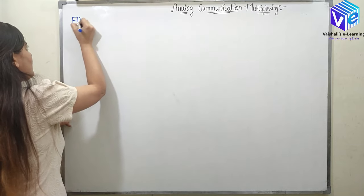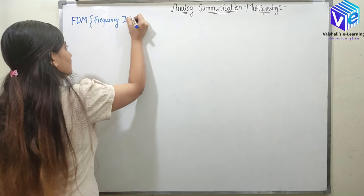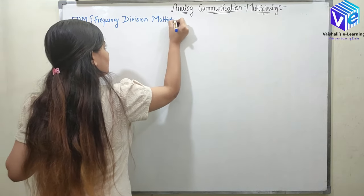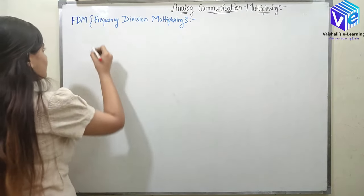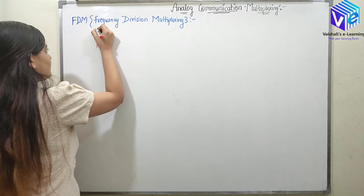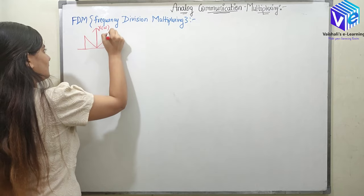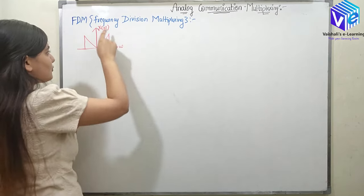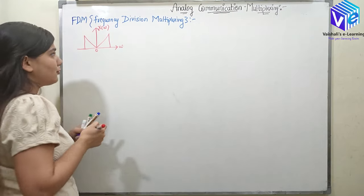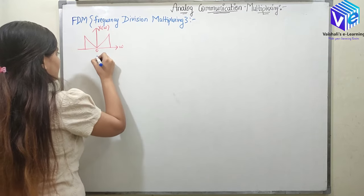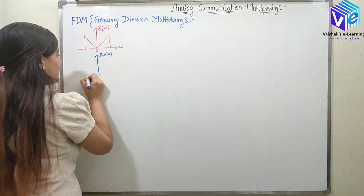We have two types of multiplexing. The first is FDM, or Frequency Division Multiplexing. Now here we have three signals. Let's take this first signal — this is my first signal. This is the frequency, and it's a baseband signal because it's centered around zero. Let's take another signal — this is x1 of omega, and I'll take x2 of omega here.